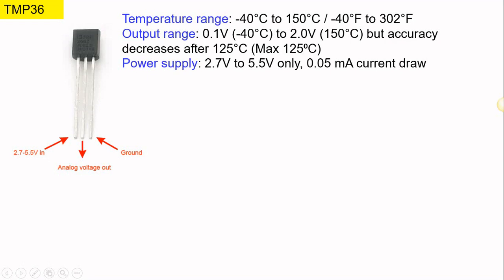The power supply for this sensor can be within the specified range, and only 0.5 milliampere current is drawn by this sensor. Before we start our coding, we need to refer to the datasheet of the component first.